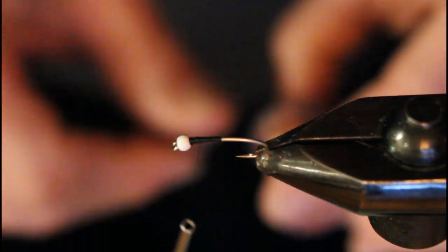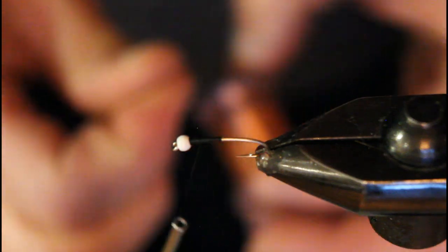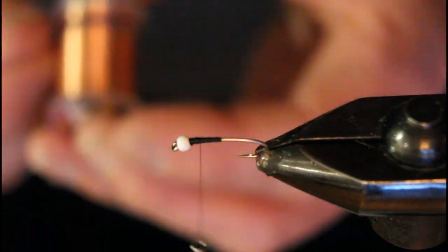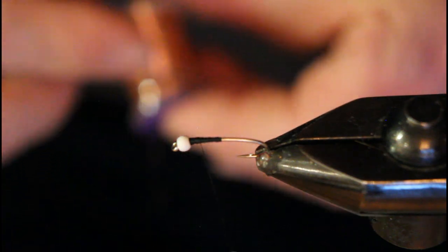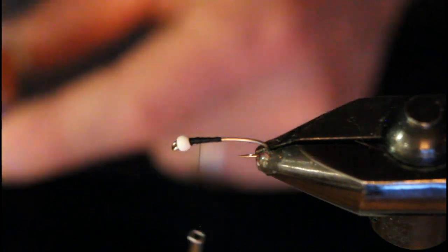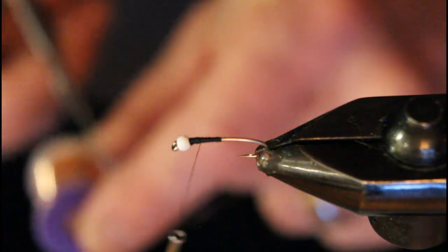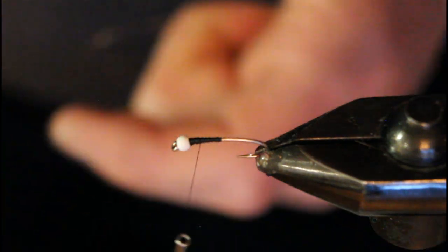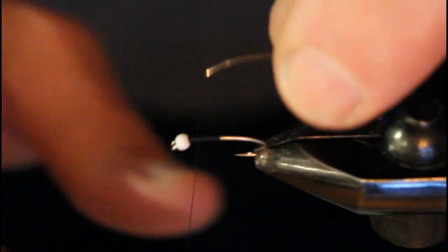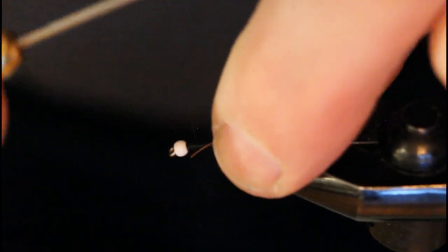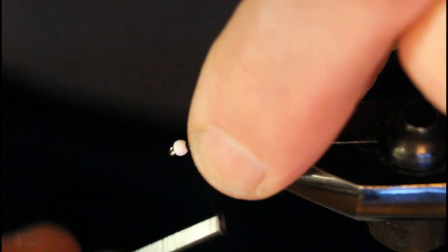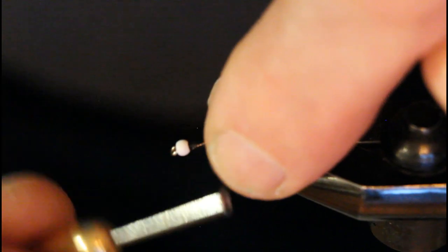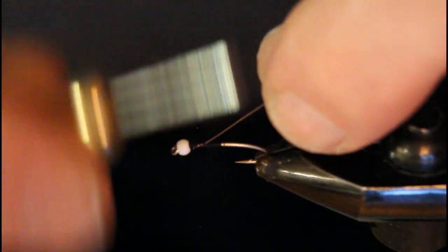I'm just going to cut off a section of that there. We go with extra small as this fly is quite a tiny fly and we need a very small rib to be proportional with the fly. Now we'll secure that in there behind the bead and make sure we lock it in place with some good wraps.